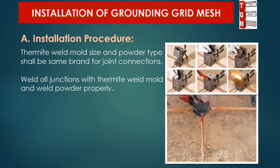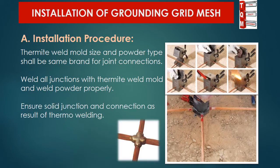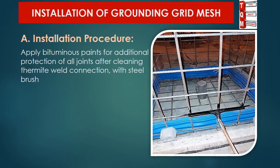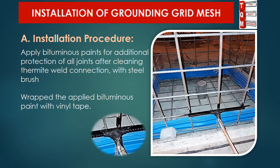Weld all junctions with thermite weld mold and weld powder properly, ensuring a solid junction and connection as a result of thermal welding. After performing the joint welding, it is very important to clean the thermite weld connection with a steel brush, then carefully apply bituminous paint for additional protection of the joints, and then wrap the applied bituminous paint with vinyl tape.